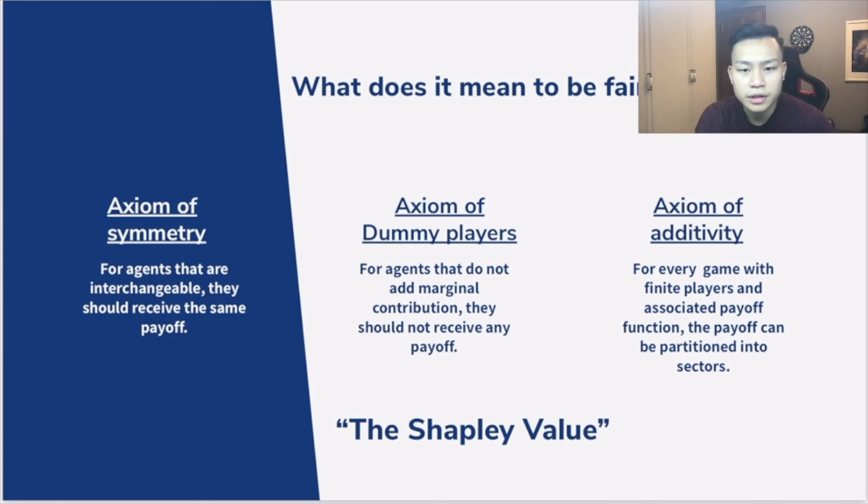For the second axiom of dummy players, it's saying that for agents that do not add a positive marginal contribution, they should not receive any payoff. It's the idea that if you can't bring anything else, anything new to the table, then you should not be receiving any utility, any payoff at all.